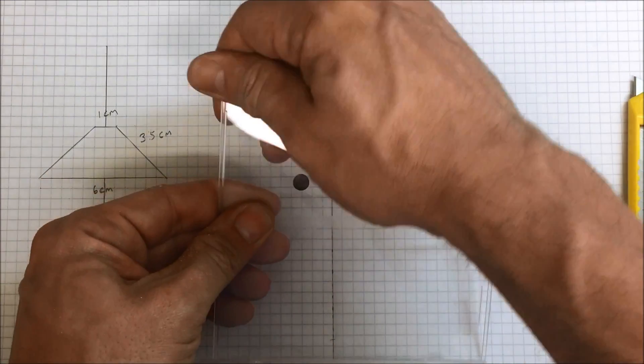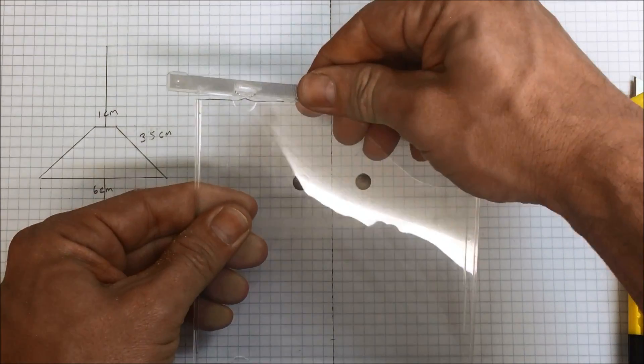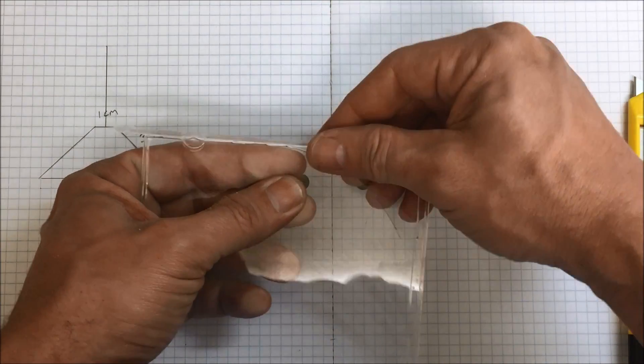Once you have your shape you can get your CD case ready. You can go ahead and take off the edges, the sides, you don't need them, they're just going to get in the way.